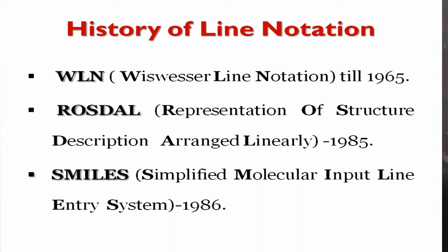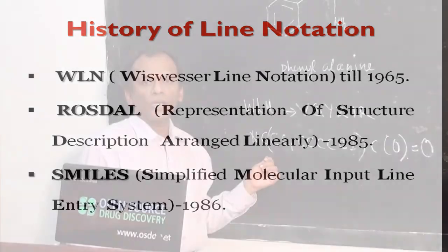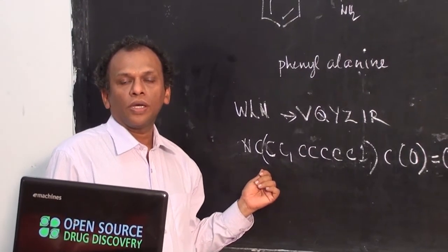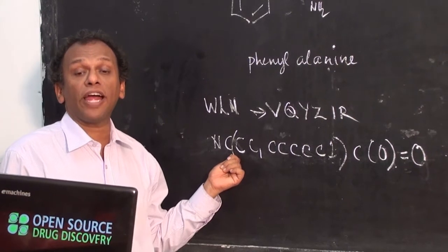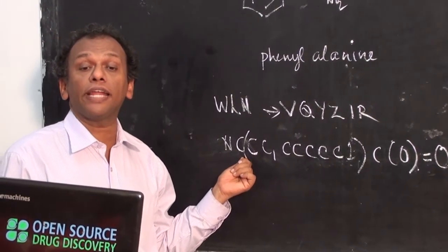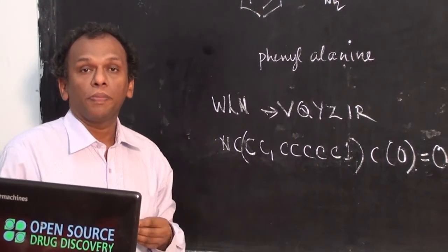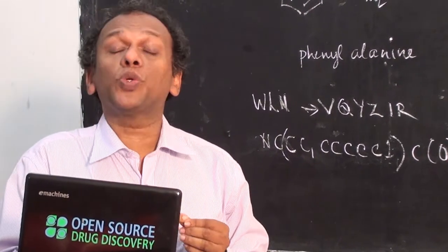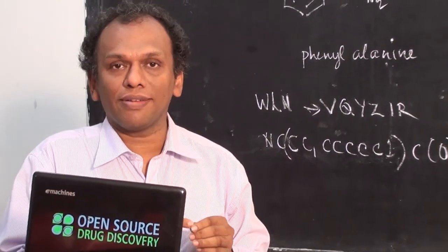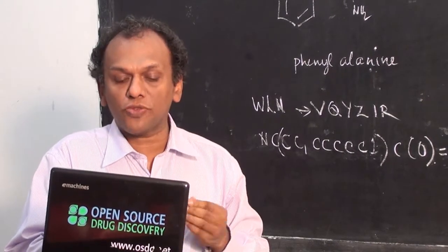Among these line notations, the most widely acceptable notation is SMILES. SMILES means Simplified Molecular Input Line Entry System. It was introduced by David Weininger. It is a universal coding language for chemistry.